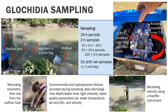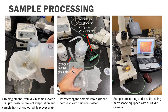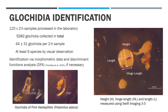Samples were preserved in the field and taken back to the lab for processing. Each sample was carefully transferred onto a petri dish to view under a dissecting microscope. Each glochidia observed was photographed using Swift Imaging 3.0 and transferred into a separate storage vial containing preservative. Among the 120 samples, a total of 5,242 glochidia were collected, with an average of 44 glochidia per two-hour sample. There are at least six species by visual observation, and identification to the species level will take place using morphometric data of the height, hinge length, and length. Some species, like the pink heel splitter, are distinctive and identifiable by visual observation. Discriminant functions analysis, based on a previous Sydenham River model, will be used if necessary.